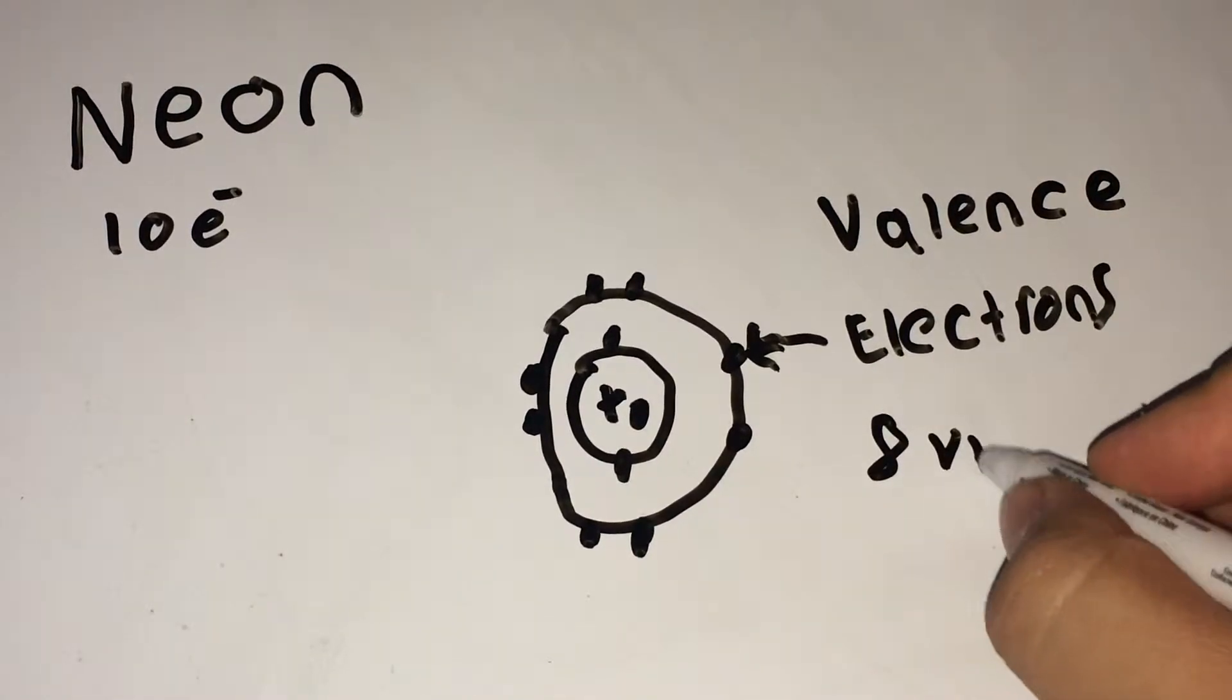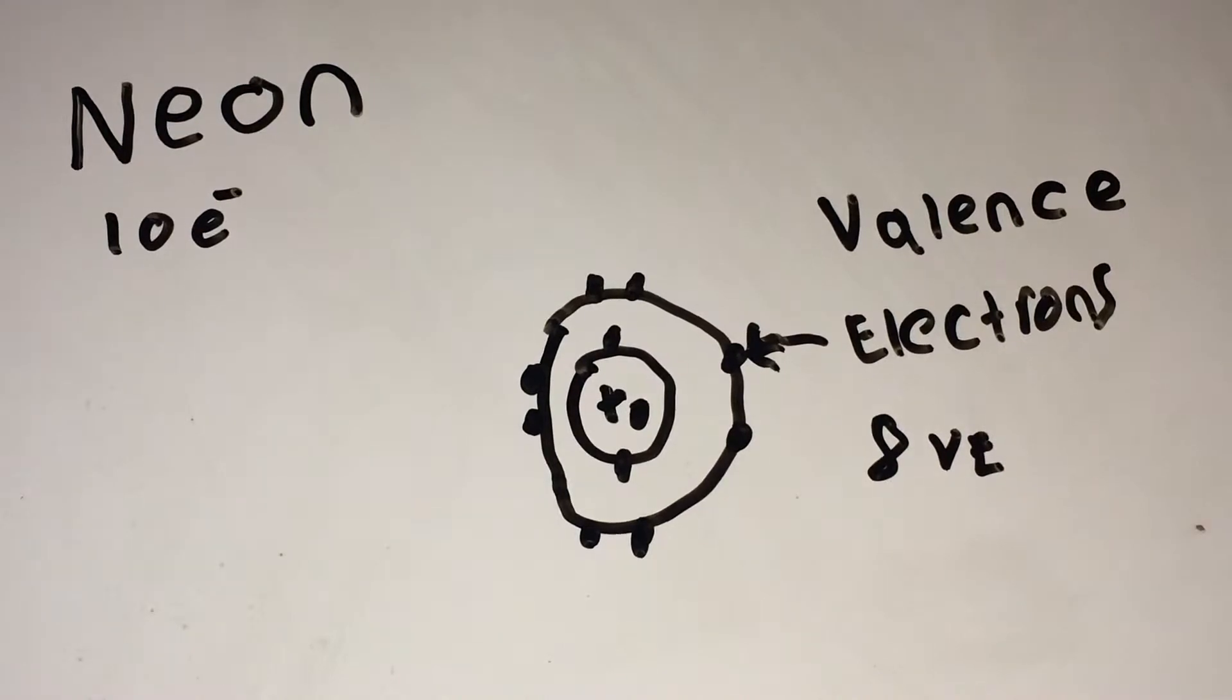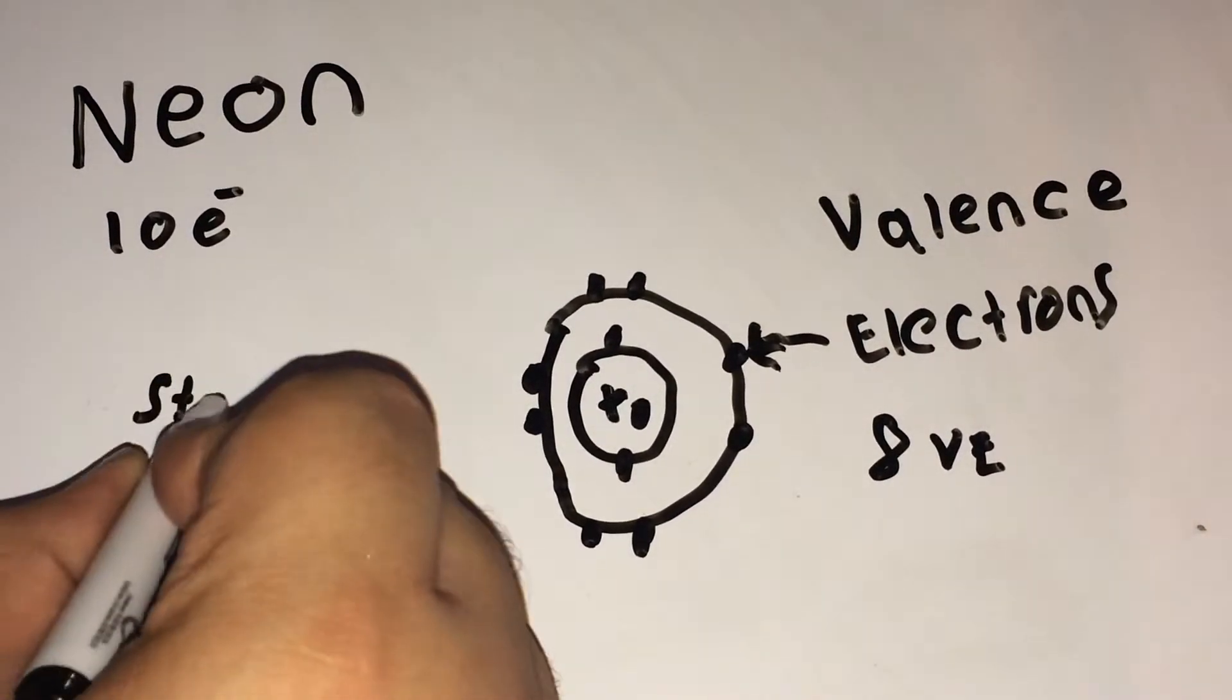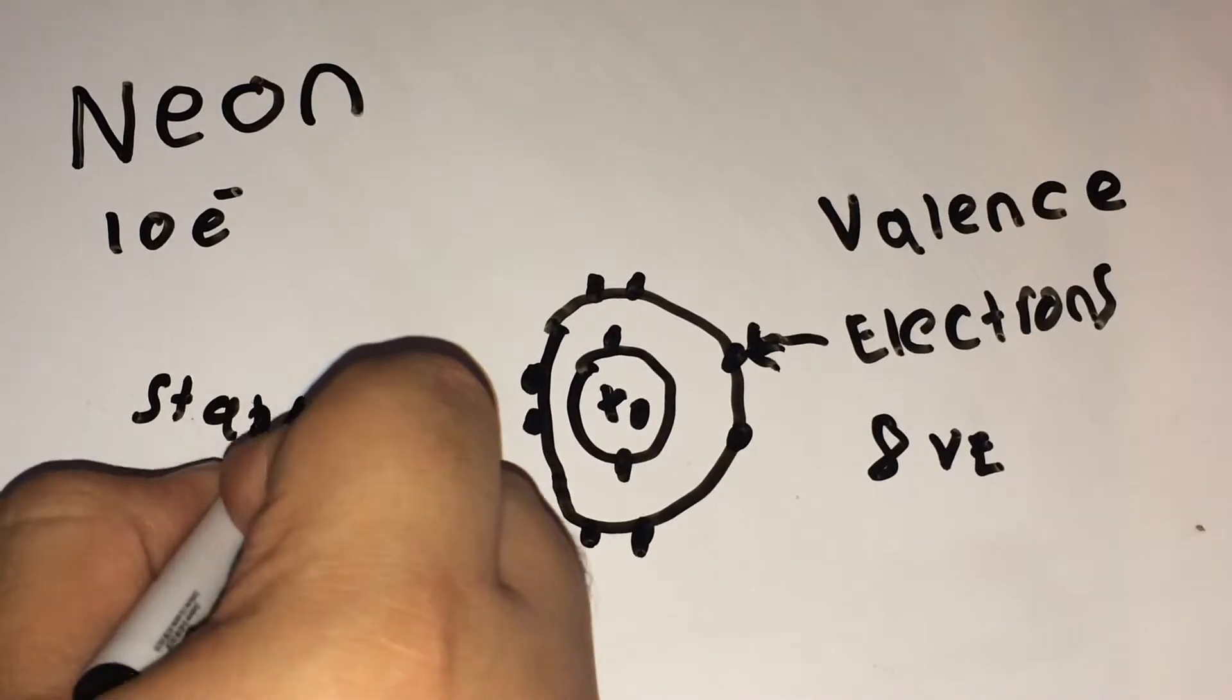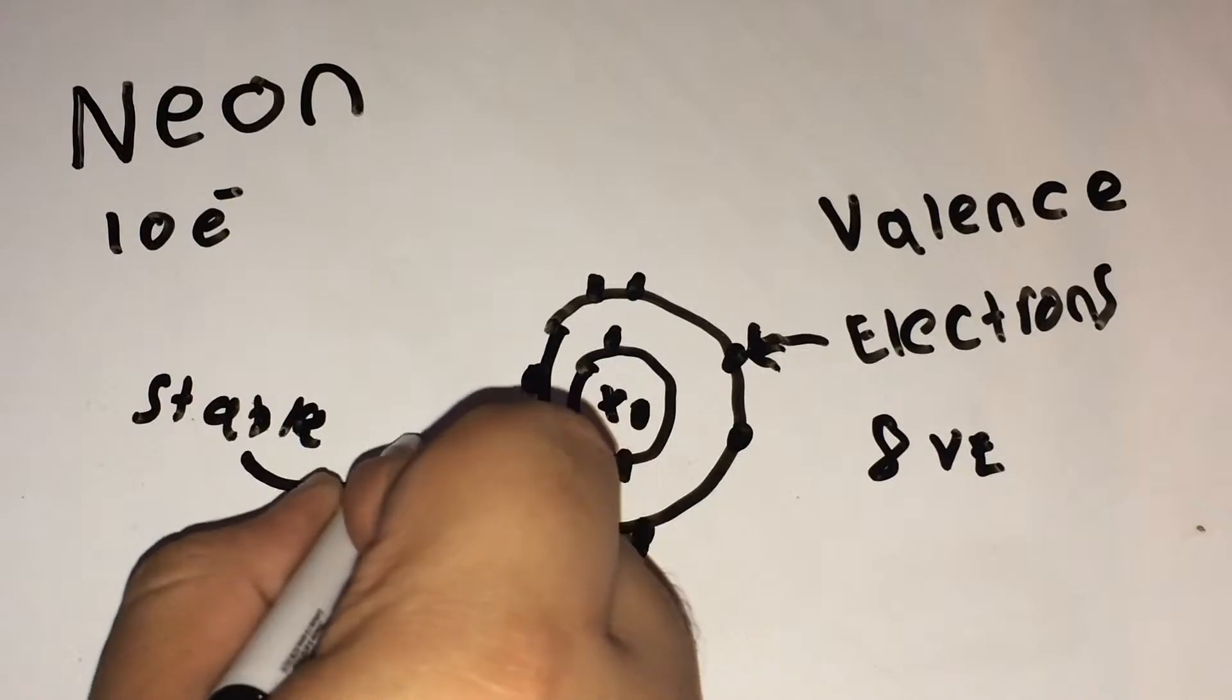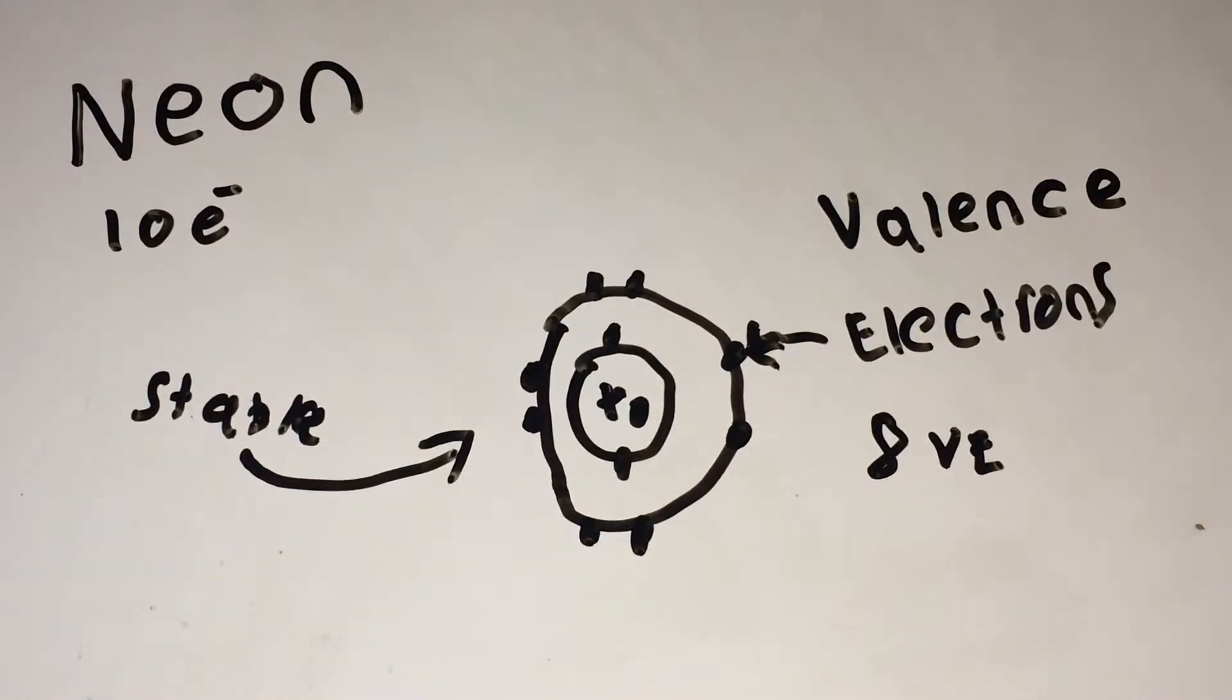The electrons orbiting in the outermost level are called valence electrons. Neon has eight valence electrons, therefore it follows the octet rule. When an element is following the octet rule, it is a stable element, meaning it is very difficult to have a chemical reaction with it.